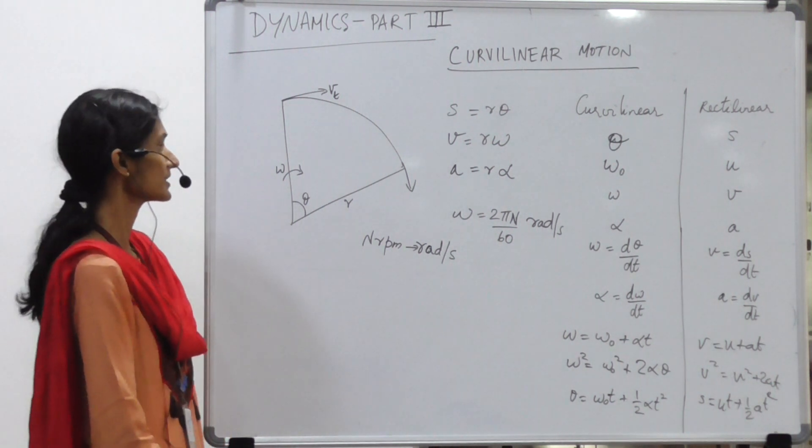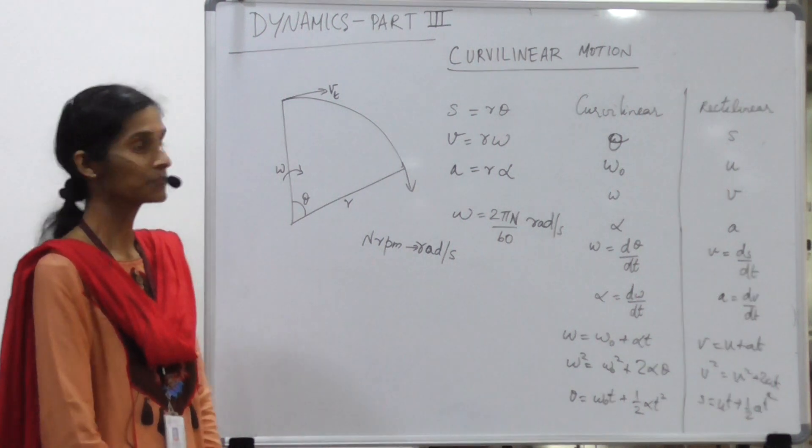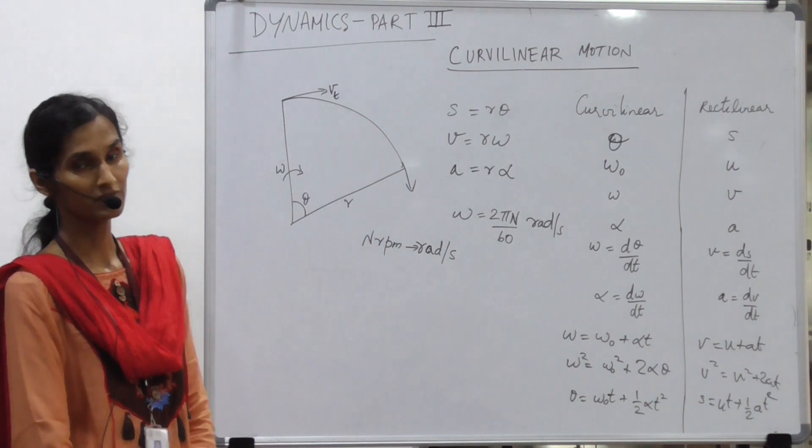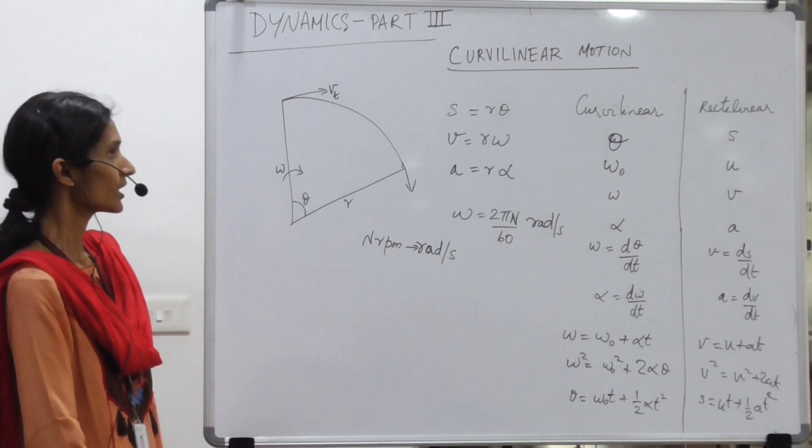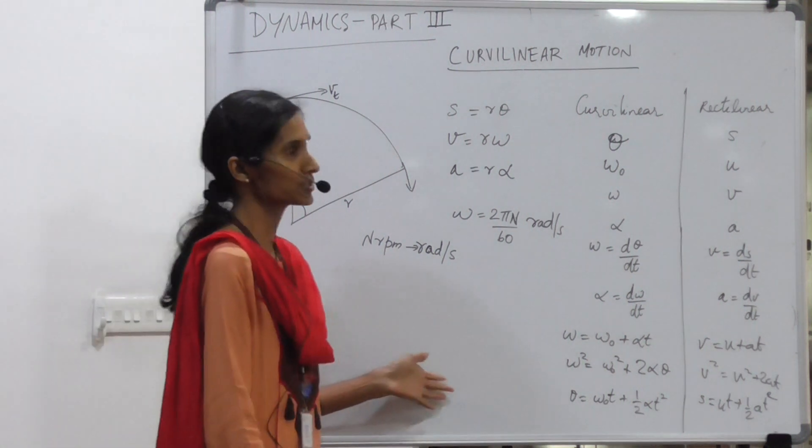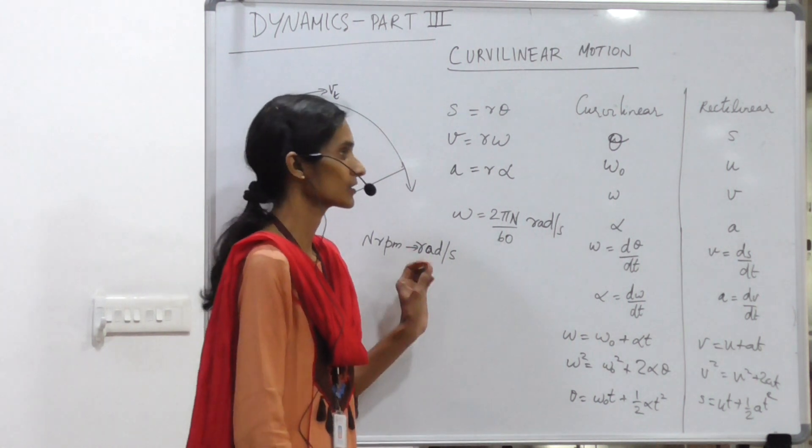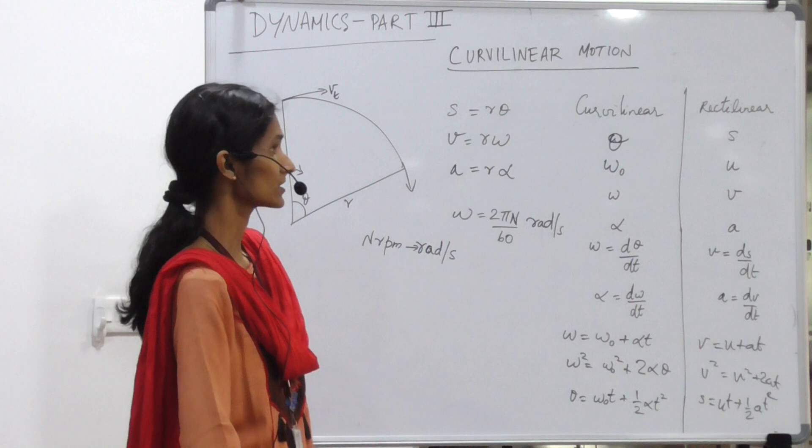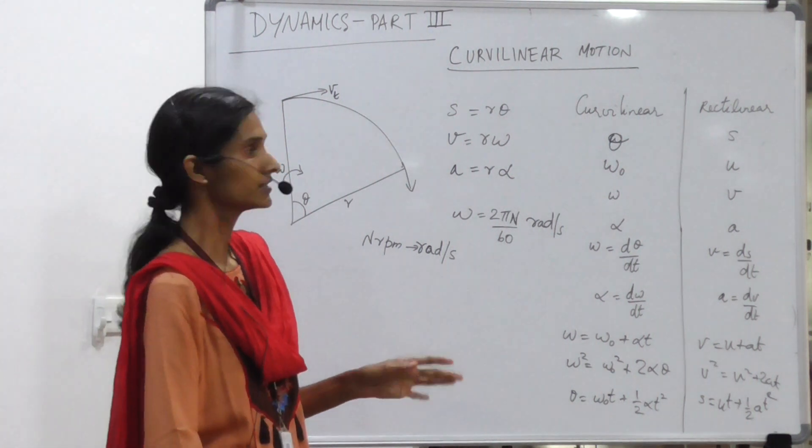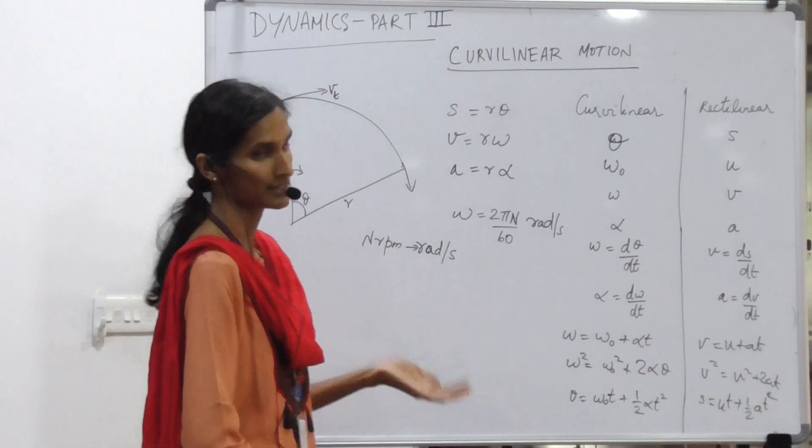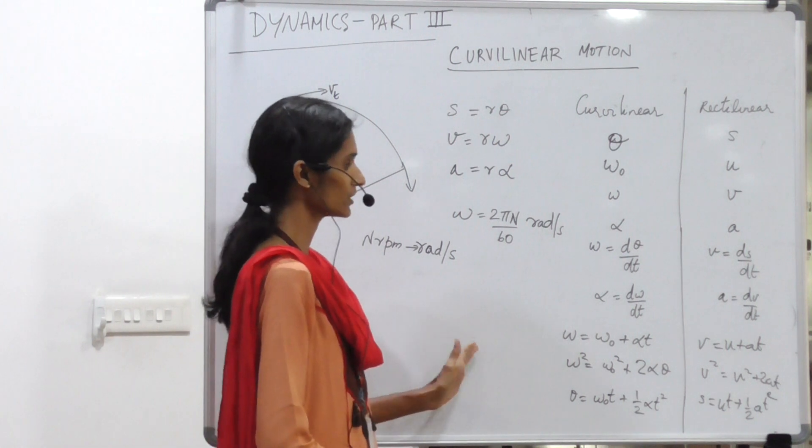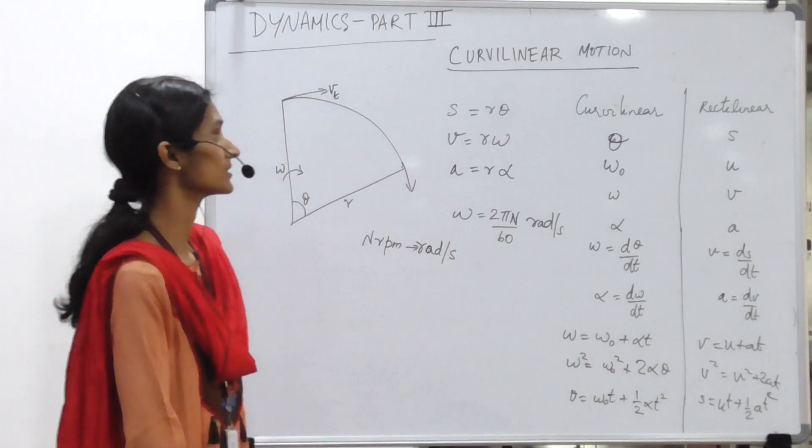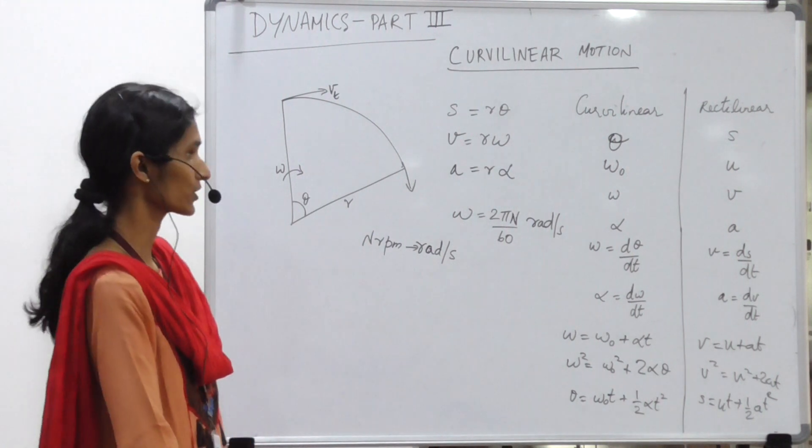The linear velocity is related to the angular velocity, and you can see the velocity acting at any point on the curve is tangential. The different relations between all the components - the displacement, velocity, acceleration - are connected just as in the case of rectilinear motion, and you can see how the analogous equations are written out.